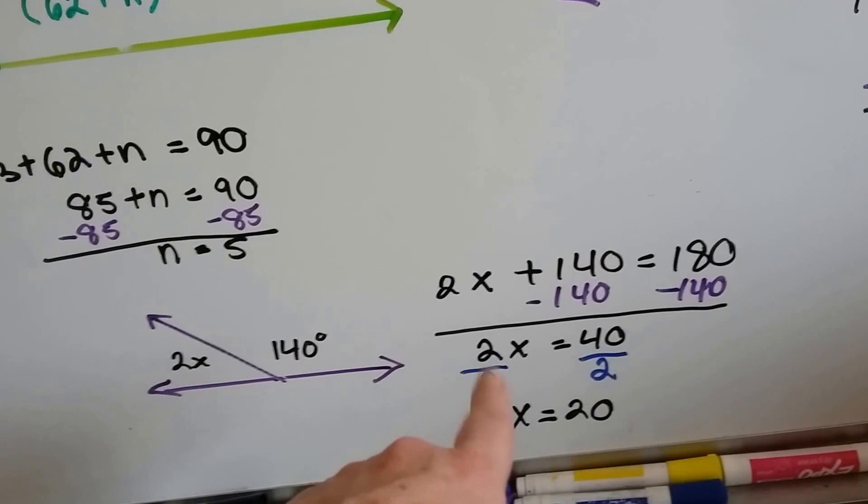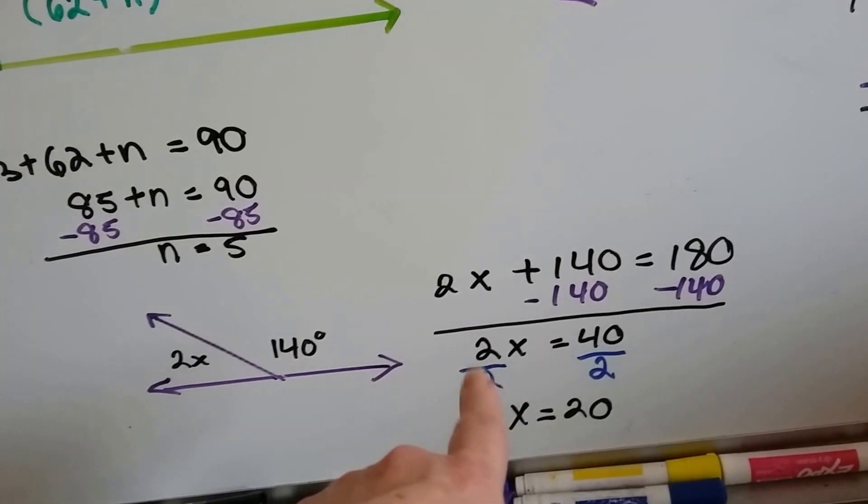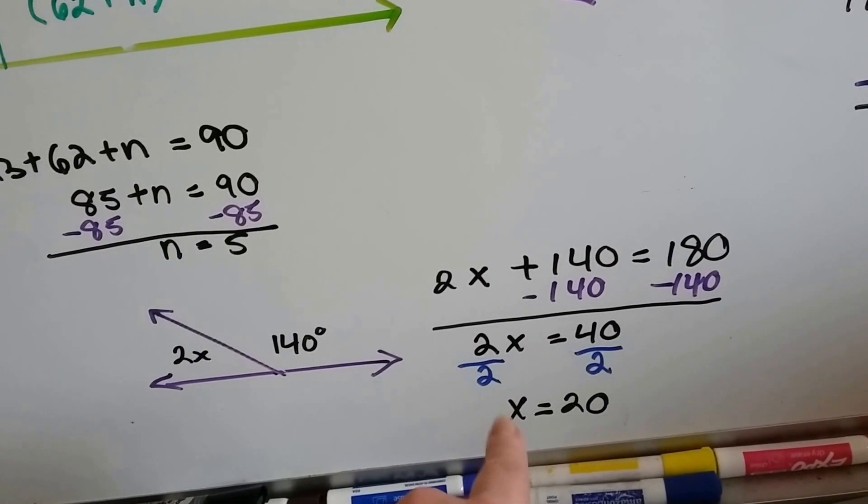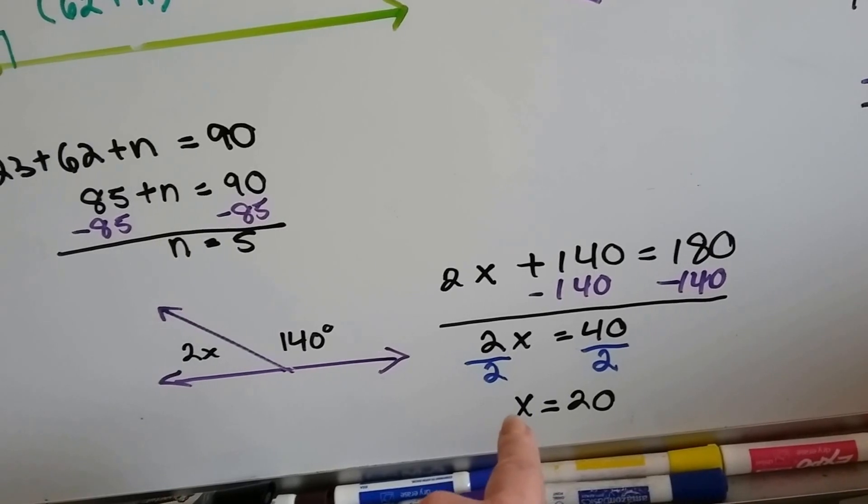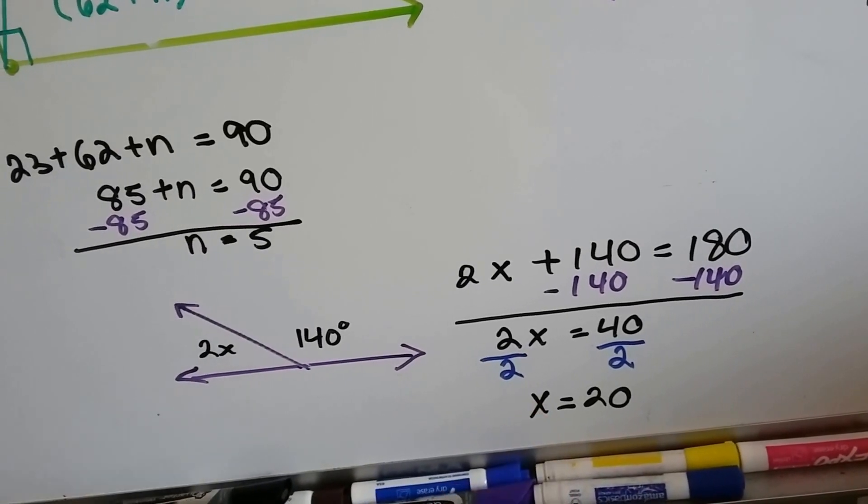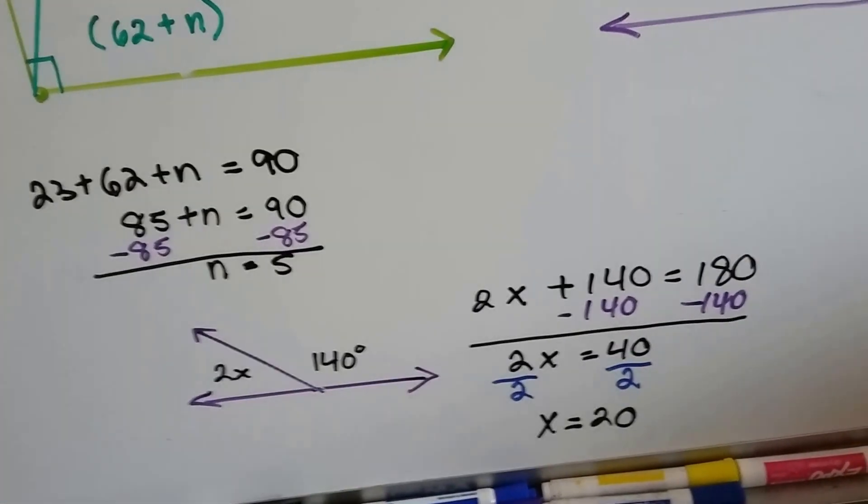We just don't write the 1, remember? 2 over 2 is a fraction that means 1. We just don't put the 1 in front of the x. The only time we start putting numbers in front of it if it's 2 or greater. 2x, 3x, 4x.